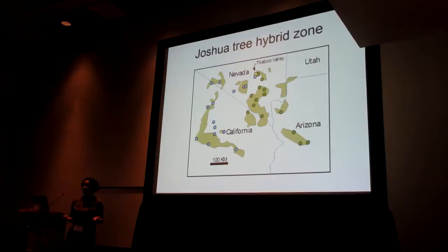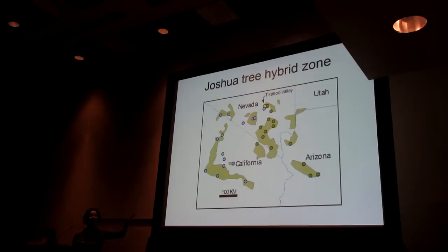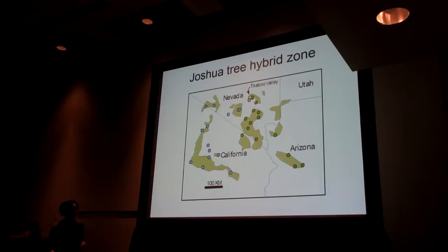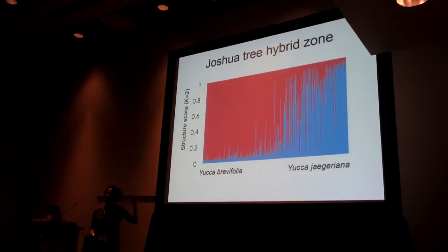Across most of the range of the Joshua trees, these two species are allopatric — brevifolia in blue on the left of the map and jaegeriana in green on the right. But there is one known zone of hybridization in Joshua trees, at the top of the map in Southern Nevada: Tikaboo Valley. Let's look at what that hybrid zone looks like genetically.